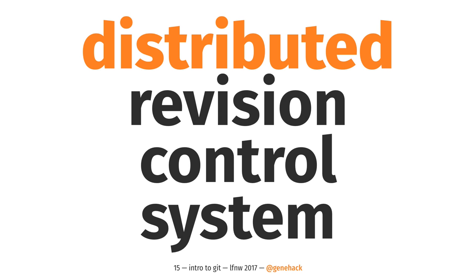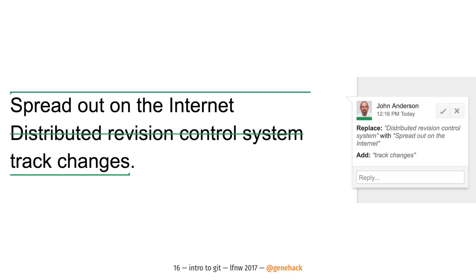Back to our definition: revision control system is just track changes. What does 'distributed' mean? It just means spread out across the internet — that's really all it means. So distributed revision control system is really just a fancy CS-jargony way of saying track changes spread out across the internet, across multiple people.